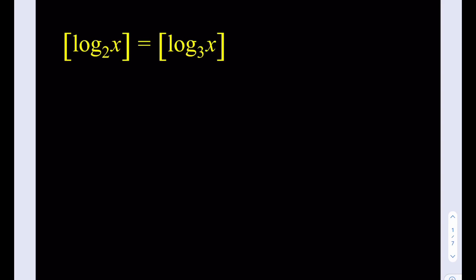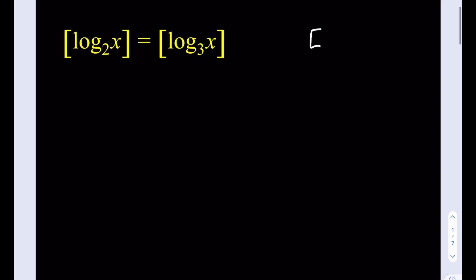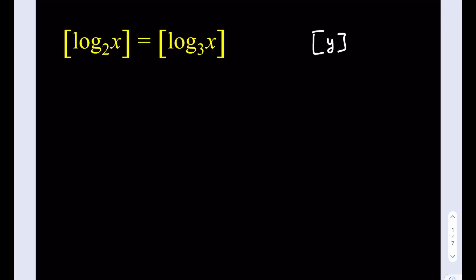Go ahead and give it a try first before you watch the video. Okay, let's get started. The greatest integer function — let's call it the floor function — is defined as follows: the floor value of y equals k, where k is an integer, means that y is between k and k plus 1.